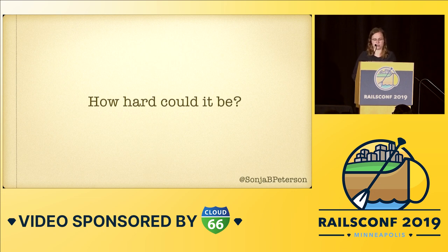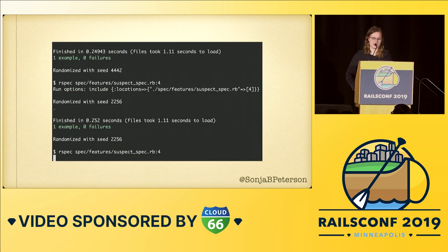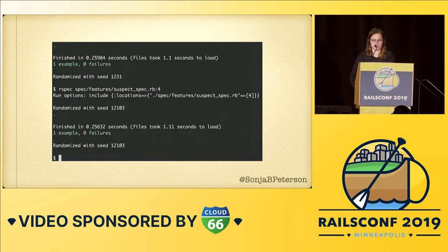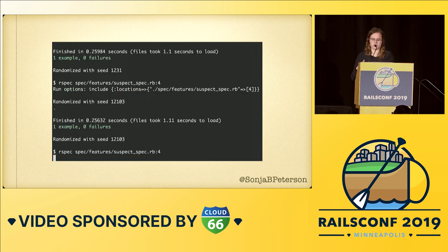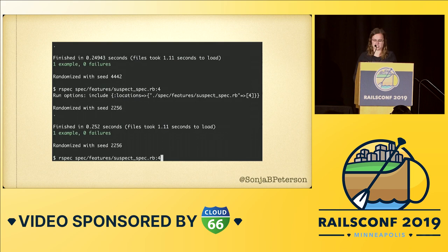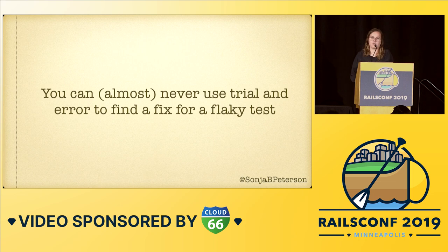The only problem was I had never fixed a flaky test before, and I had no idea why a test would pass or fail on different runs. So I did what I often did when debugging problems I didn't understand — I started out by trying trial and error. I made a random change, then ran the test over and over to see if it would still fail occasionally. That approach can work sometimes with normal bugs, but it didn't work at all with this flaky test. Trying a random fix and running it 50 times didn't actually prove I had fixed it, and a few days later, even with that fix, it still failed again.